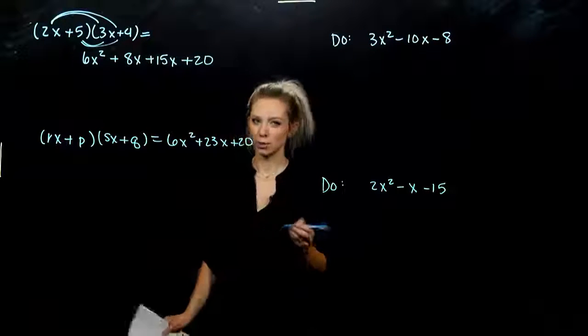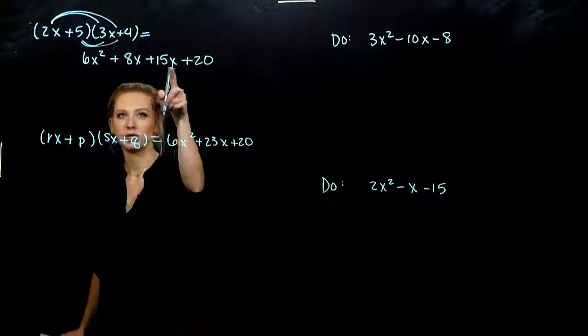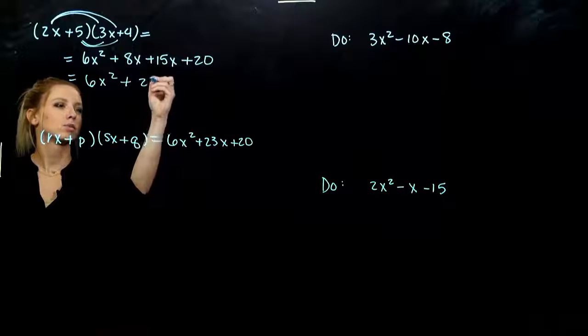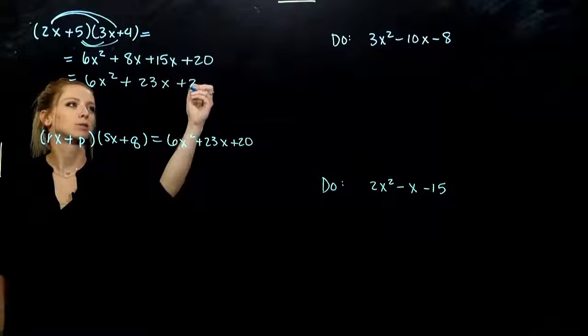So we want to simplify, combine our like terms in the middle here. So we're looking at 6x squared plus 23x plus 20.